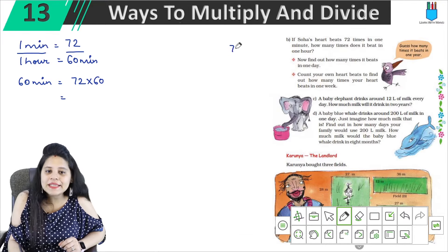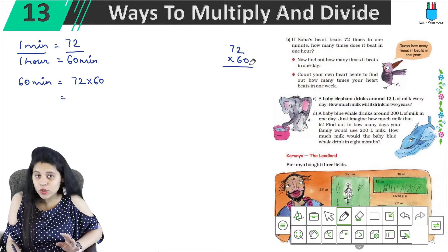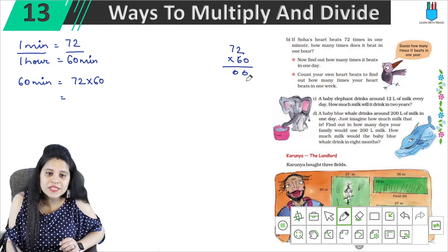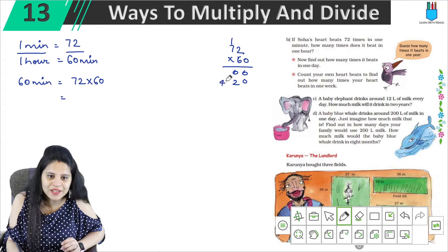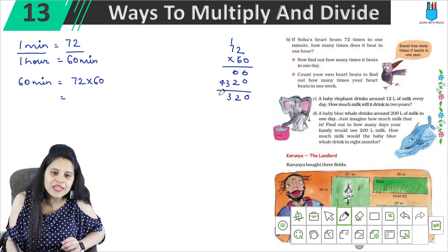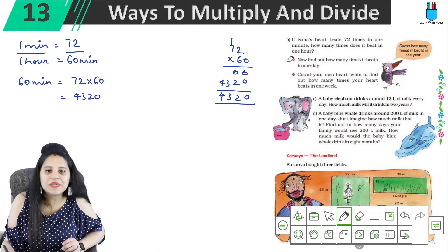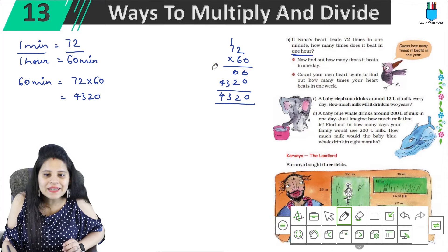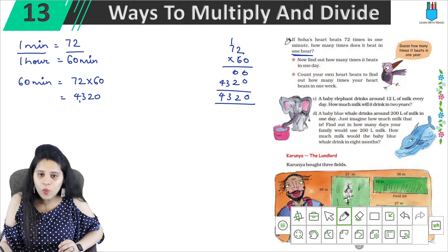So let's multiply it — 72 multiplied by 60. We put a zero, then 6 into 2 is 12, carry 1. 6 into 7 is 42 plus 1 is 43. So the result is 4,320. That means if we calculate for one hour, it will be 4,320 times.